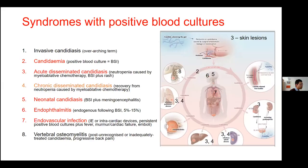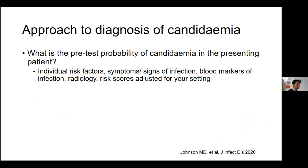Let's move on to laboratory diagnosis. The syndromes highlighted in red are those where you often find a positive blood culture — that would be your first port of call. Chronic disseminated candidiasis is a plus or minus; you may not always find a positive blood culture, so a biopsy is worthwhile if you suspect this diagnosis. With vertebral osteomyelitis, blood cultures are usually not positive, so you need to go to the source of infection and make a diagnosis using tissue or pus.